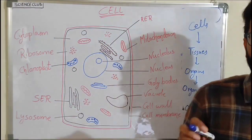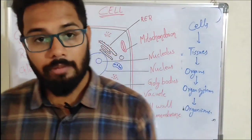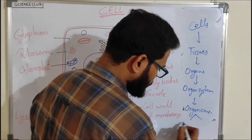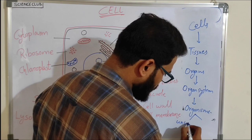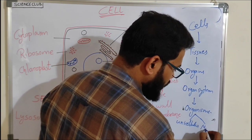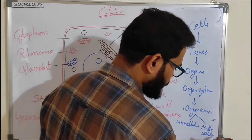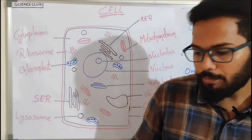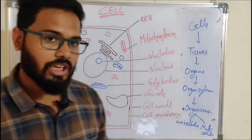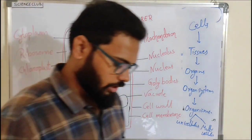A group of organ systems forms an organism. That means all organisms are made up of cells. They may be single-celled — meaning unicellular — or made up of many cells — meaning multicellular.